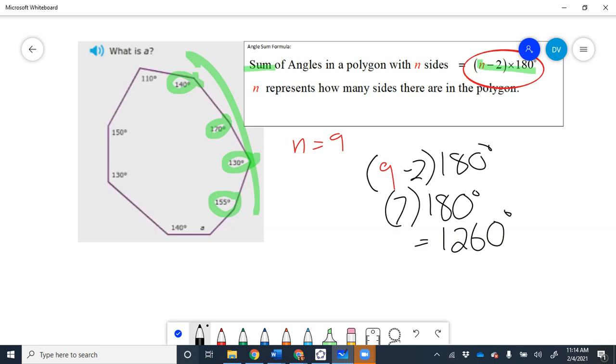So, the first angle that I'm going to write is 155 degrees, plus 130 degrees, plus, is that 170, I think, plus 140, plus 110 degrees. Plus 150 degrees, plus 150 degrees, plus another 100, oh, wait, I'm sorry. The next one is 130, isn't it? 130, plus 140 degrees, plus A, right?